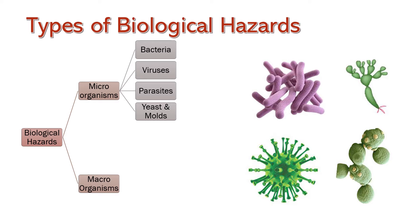Parasites are organisms that live on or in a host organism. Bacteria are responsible for most of the foodborne illnesses and are the biggest threat for food safety. Common foodborne pathogens like Salmonella, Campylobacter, and E. coli affect millions of people annually.